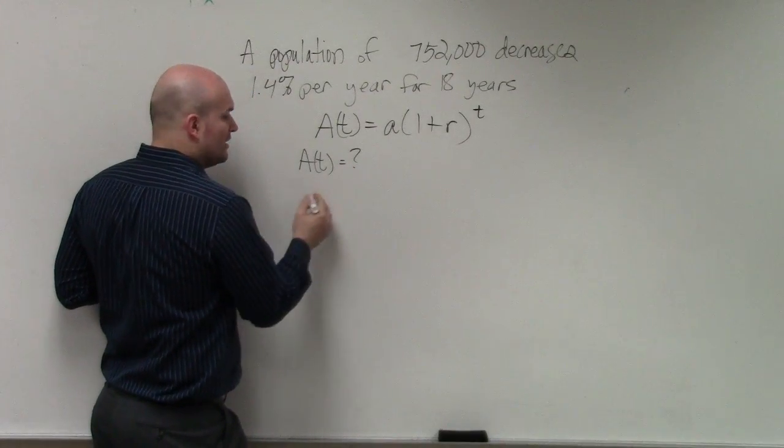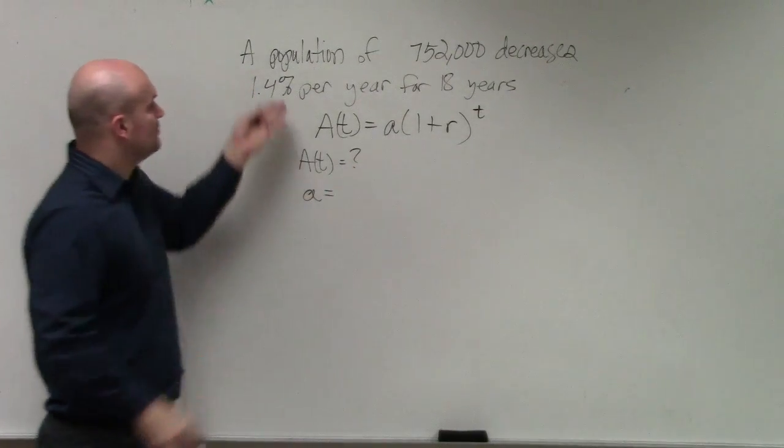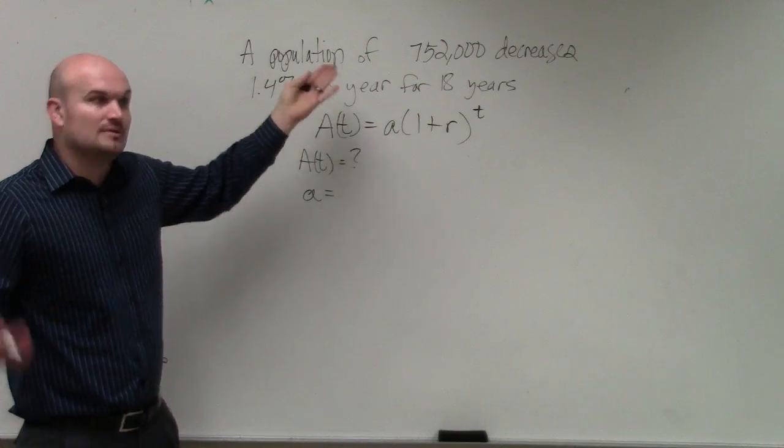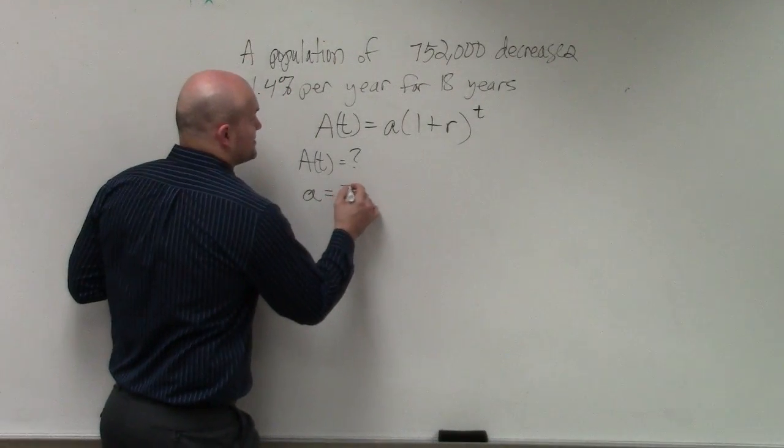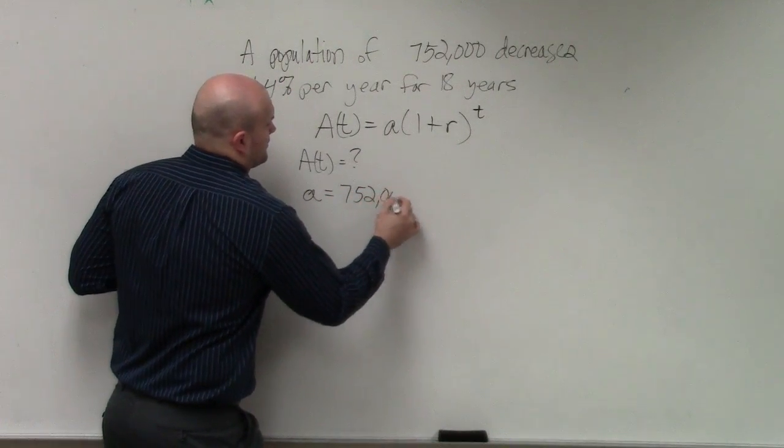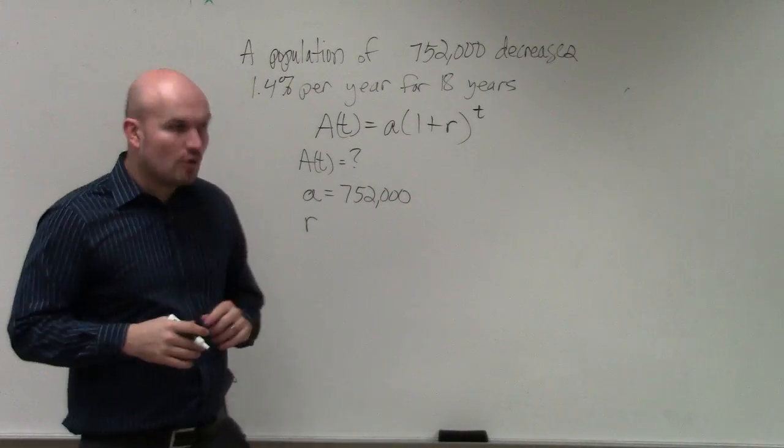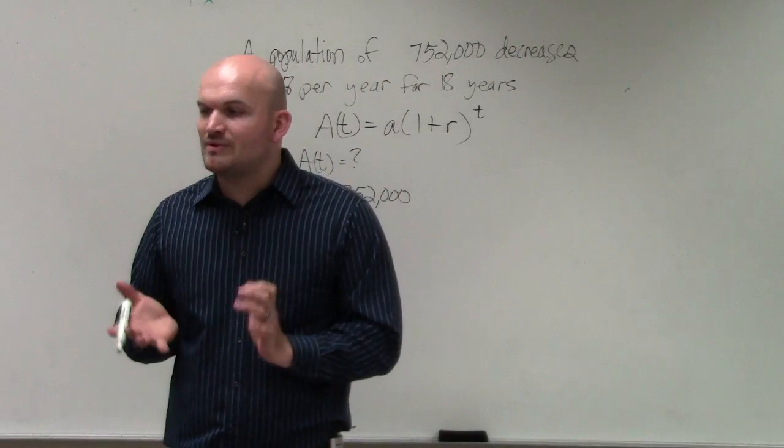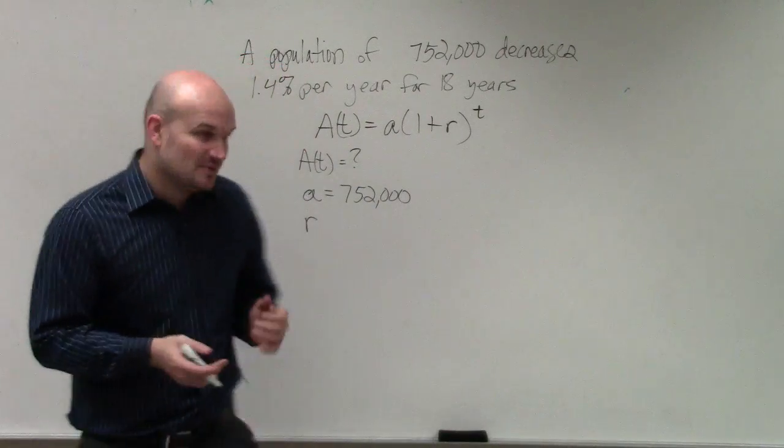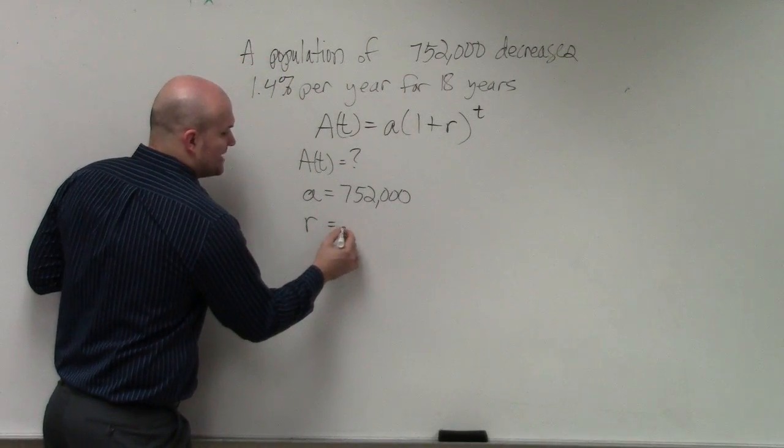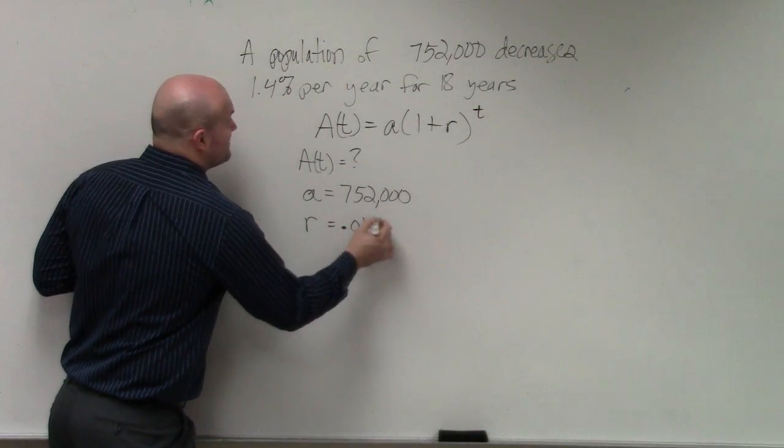Remember, a represents the initial amount. It says a population of 752,000, that's going to be your initial amount. It says your rate is going to be 1.4%. Please remember rates, we're always dealing with rates as decimals. So 1.4% is 0.014.